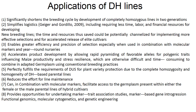These traits are otherwise difficult and time consuming to combine in adapted germplasm using conventional breeding practices. It fulfills the requirements for plant varietal protection due to complete homozygosity and homogeneity of double haploid based parental lines. It reduces the effort for line maintenance. It can be combined with molecular markers to facilitate access to germplasm present within either female or male parental lines or hybrid cultivars, and provides opportunity for marker-trait association studies, association mapping, marker-based gene introgression, functional genomics, molecular cytogenetics and genetic engineering.